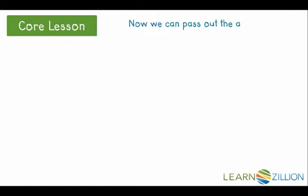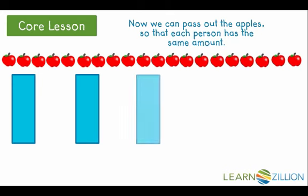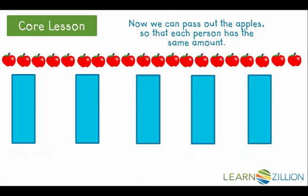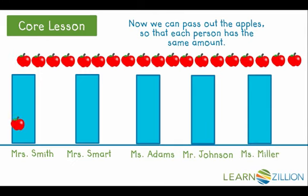Now let's take the twenty apples and begin distributing them so that each person has the same amount. Imagine you are dealing a deck of cards to a group of friends. Let's say you have five friends. We want each person to get exactly the same amount.